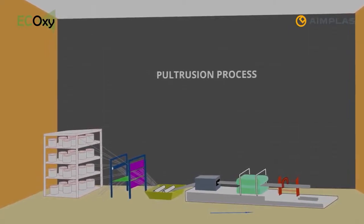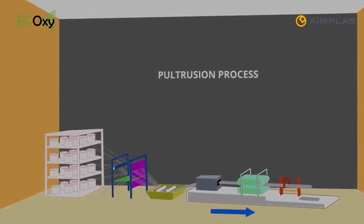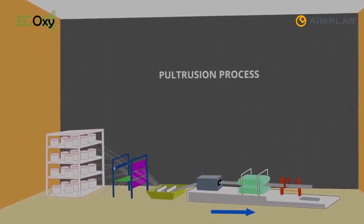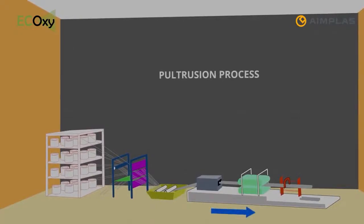One of the main features of this process is the wide variety of materials that can be used: different types of resins, fibers, loads, etc., covering a wide spectrum of properties of the final composite.